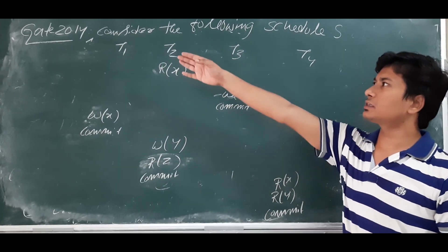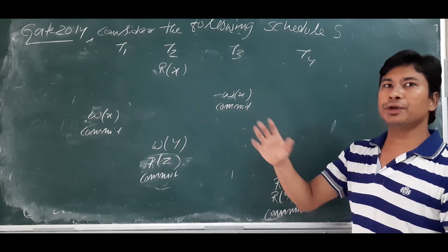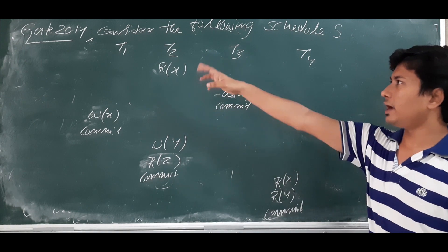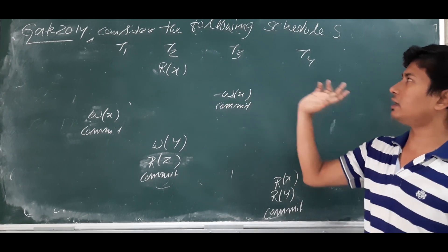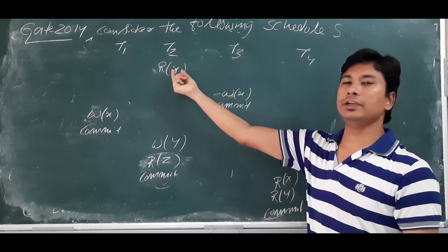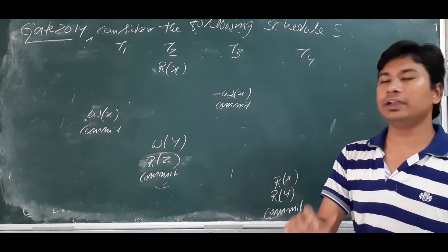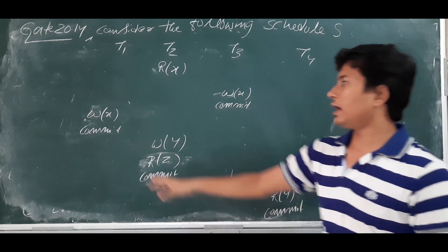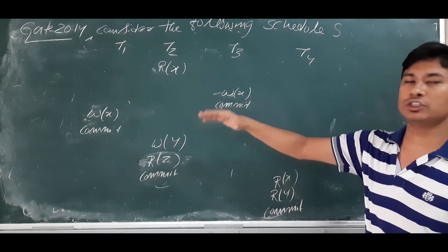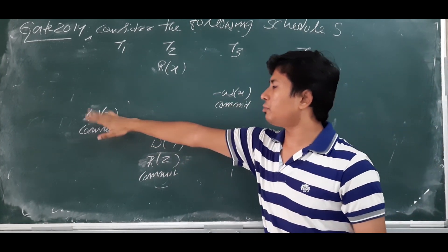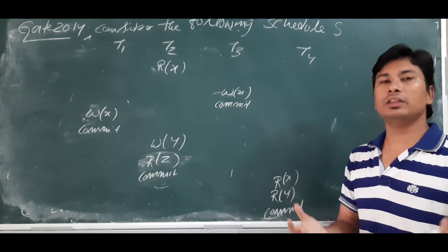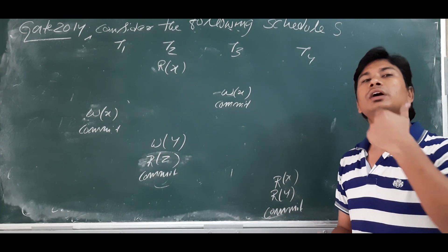Good morning students. Today we will discuss one of the GATE 2014 questions related to conflict serializability and recoverable schedules. They have given a schedule S consisting of four transactions — T1, T2, T3, T4 — where R(x) is reading a data item x and W(x) is writing on a data item x. The main question is whether the schedule is conflict serializable or not, and recoverable or not.